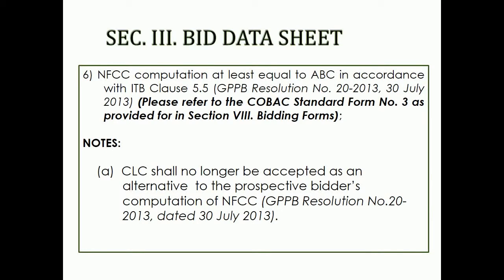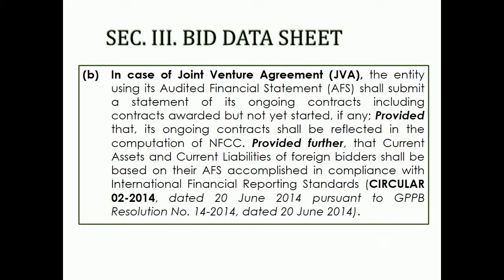6. NFCC computation at least equal to ABC in accordance with ITB clause 5.5. a. CLC shall no longer be accepted as an alternative to the prospective bidder's computation of NFCC. b. In case of joint venture agreement, the entity using its audited financial statement shall submit a statement of its ongoing contracts including contracts awarded but not yet started, if any. Provided that its ongoing contracts shall be reflected in the computation of NFCC. Provided further, that current assets and current liabilities of foreign bidders shall be based on the AEFS accomplished in compliance with international financial reporting standards.